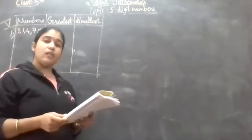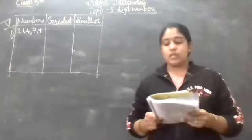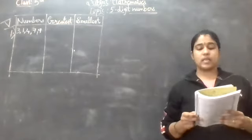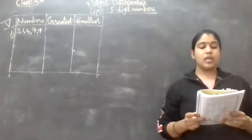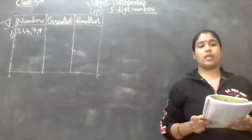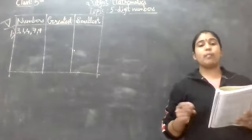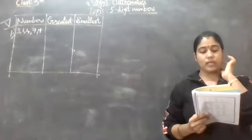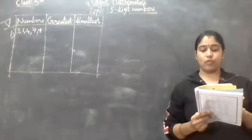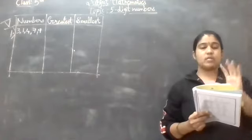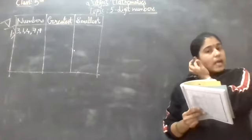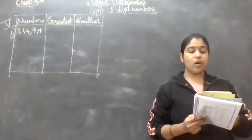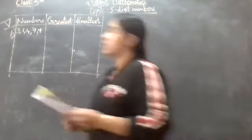So the homework was your fifth and sixth sums. In the fifth sum, what we are going to see: form the greatest and the smallest 5-digit numbers using the following digits without repetition — that is the condition, we should not repeat the numbers. So what is the example I have given? Example one: 3, 1, 4, 7, 9. I have given you five digits and then shown how to make the greatest and how to make the smallest.